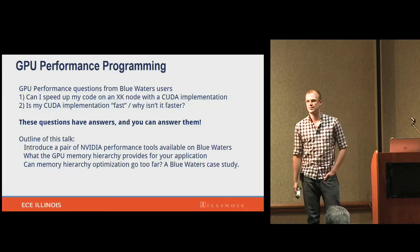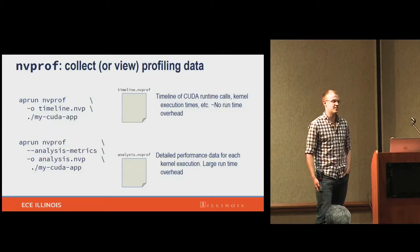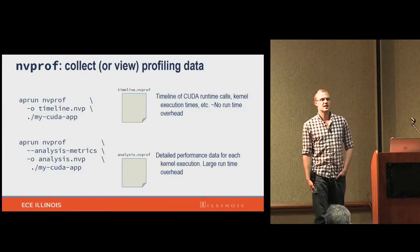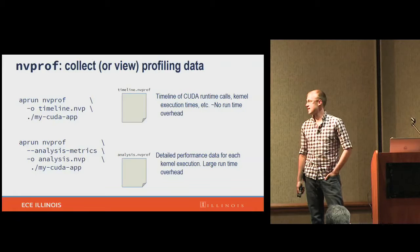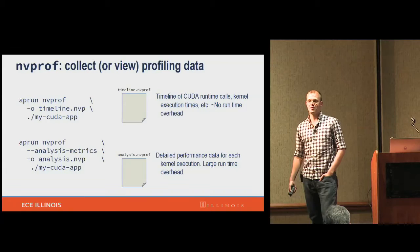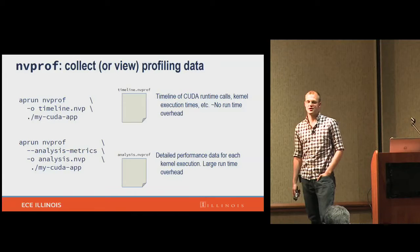The first tool is NVProf — it's the basic NVIDIA profiler. You can use it on the command line to get function runtimes and call stacks. But the way we like to use it is to invoke it twice: once to collect a timeline of CUDA functions, kernels, and runtime calls — such as memory allocations, device-host transfers — which has very little execution overhead.